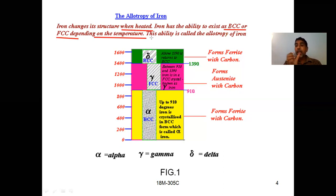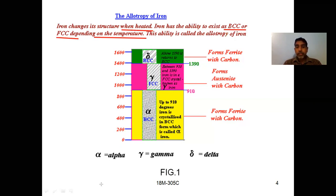We are going to discuss the allotropic forms of iron with respect to temperature, here in degrees centigrade. Taking temperature on the y-axis and time on the x-axis: above 1390°C (the green portion) you are having delta iron. What is the structure of delta iron? It is BCC — body-centered cubic.